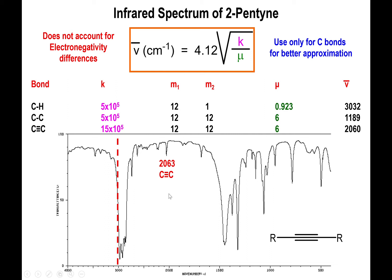Sometimes you might need extra information just to confirm you have a triple bond. Mass spec data can be very helpful — it might tell you the molecule has an index of hydrogen deficiency of two, which is consistent with a triple bond. Be on the lookout for this: internal alkynes don't have peaks above 3000, and the peak for the triple bond is definitely weak.